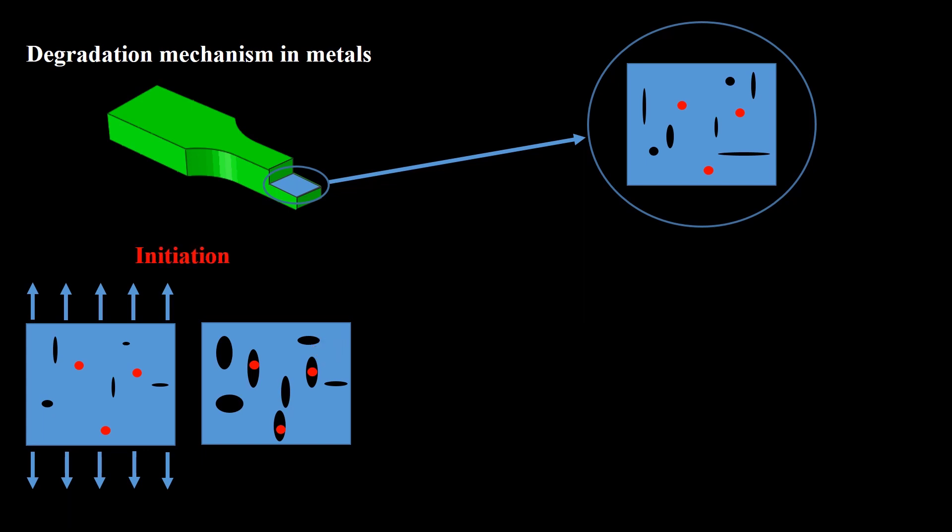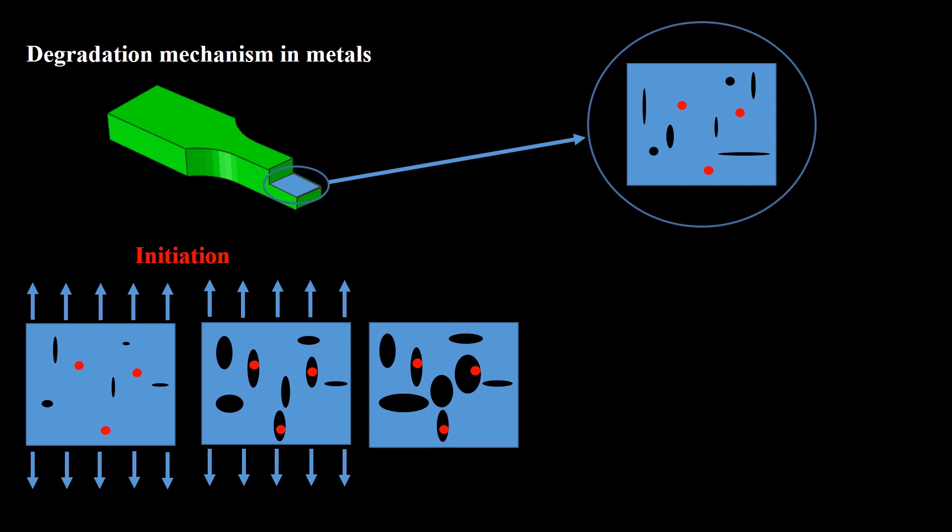Damage initiation in a material can be predicted by damage initiation rules. Various rules exist for various materials. These rules predict the onset of damage based on different parameters like stress, strain, and strain rate. By applying more deformation to the material, rather than formation of new voids, existing voids grow. This stage is known as damage growth or damage evolution.